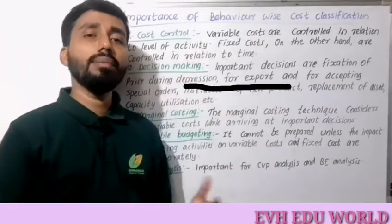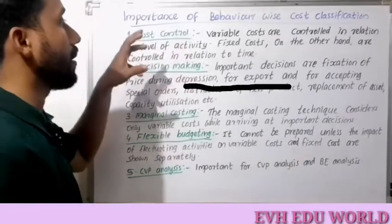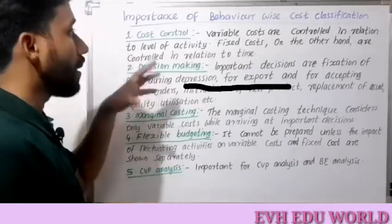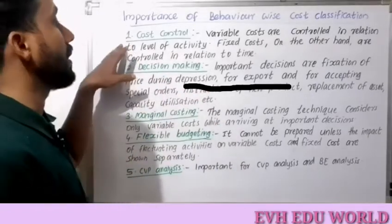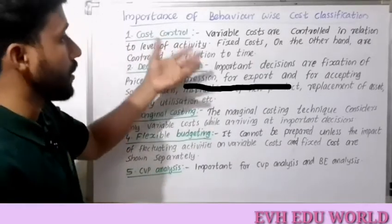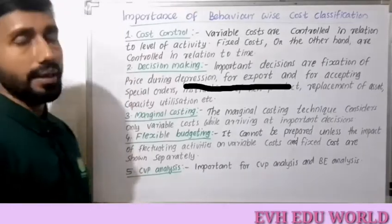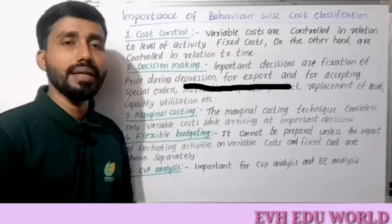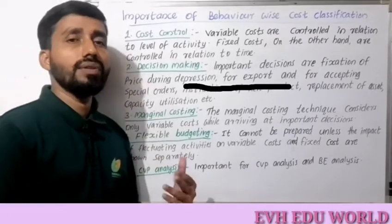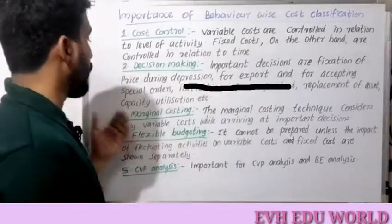An organization can control variable cost because it is more controllable. Variable cost is controlled in relation to the level of activity. In terms of time and distance, this includes fixation of pricing during depression, for export, for accepting special orders, and for replacement of asset capacity utilization.